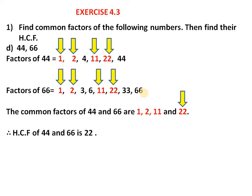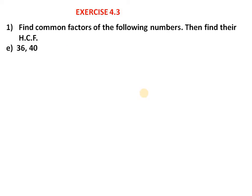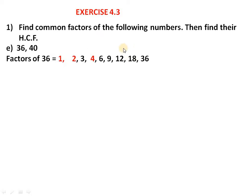Part E: 36 and 60. Factors of 36: 1 × 36, 2 × 18, 3 × 12, 4 × 9, 6 × 6 — we write 6 only once. So factors of 36 are 1, 2, 3, 4, 6, 9, 12, 18, 36. Next, factors of 40: 1 × 40, 2 × 20, 4 × 10, 5 × 8.